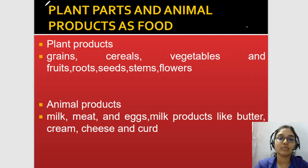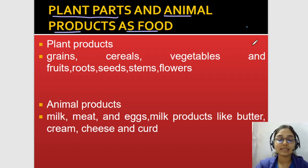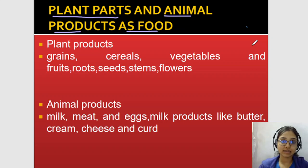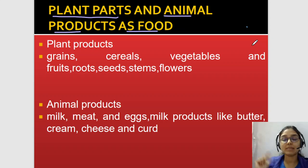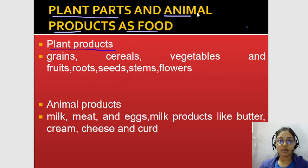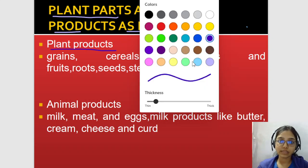Today we are going to cover plant parts and animal products as food — which parts of a plant or which animal products we can consume. Food means what we eat. What is edible? So first we will read this and then there are some keywords which we will understand. Okay, so let's start with plant products — different plant products which we humans consume.